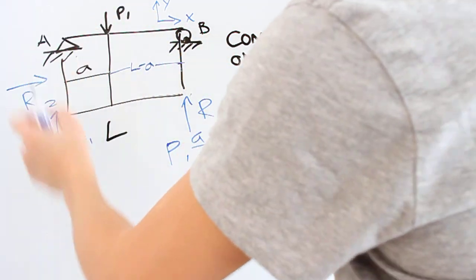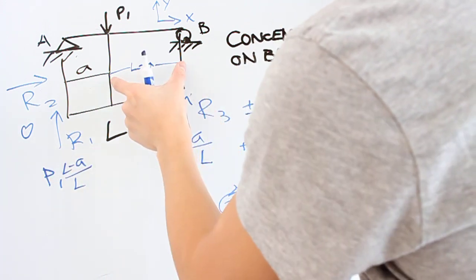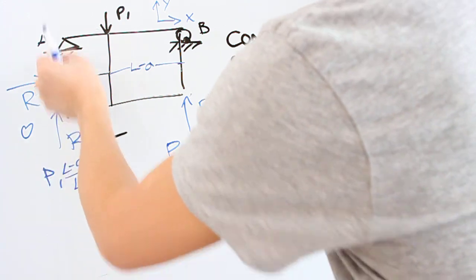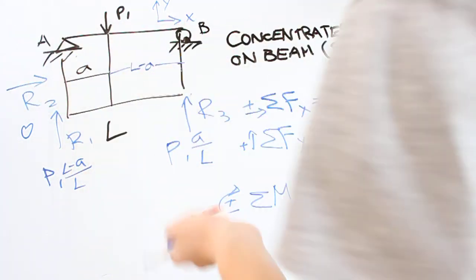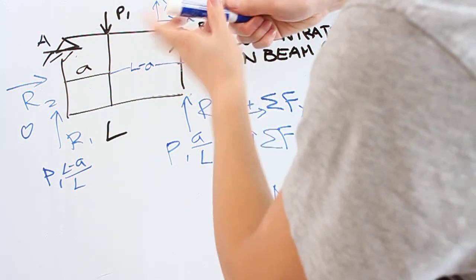Now, if you move it to the left a little bit, so a becomes small, this value L minus a is going to be bigger than a. So you're going to get more of the force being counteracted on this side than that.